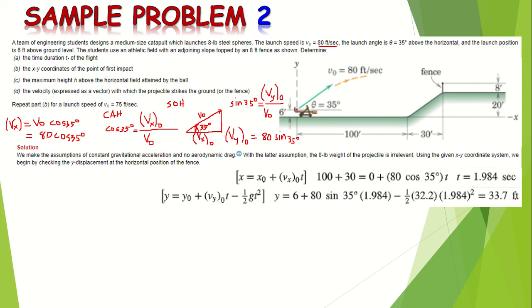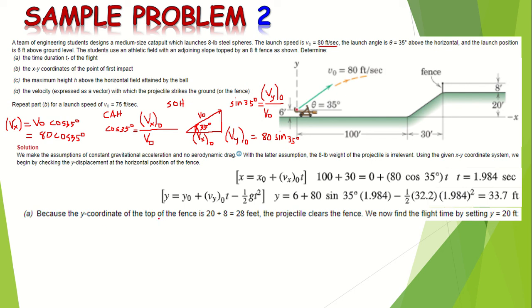The y coordinate at the fence is 33.7 feet. Since the top of the fence is at 20 plus 8 equals 28 feet, the projectile clears the fence — because 33.7 feet is greater than 28 feet.